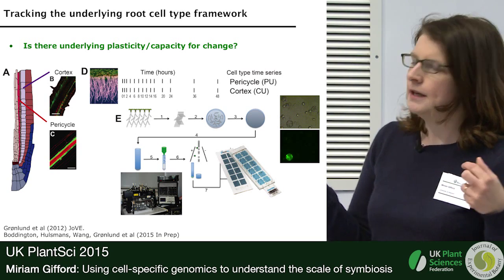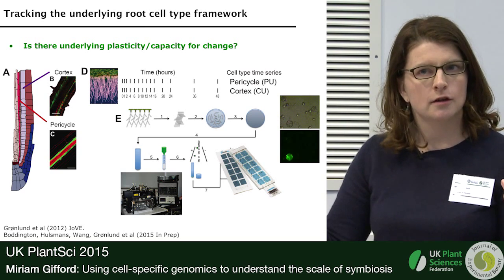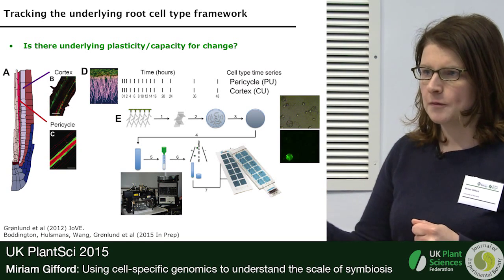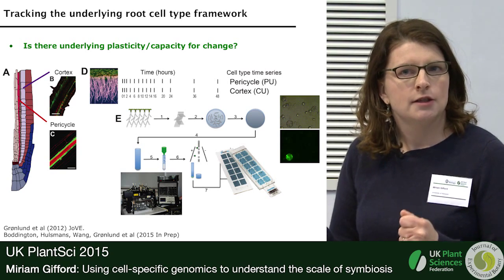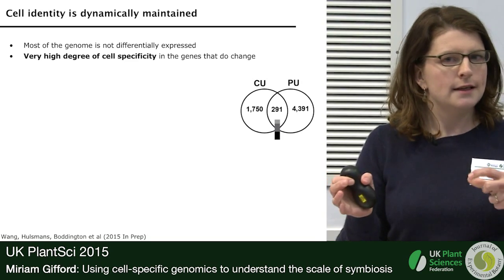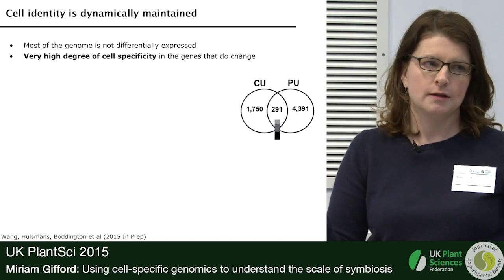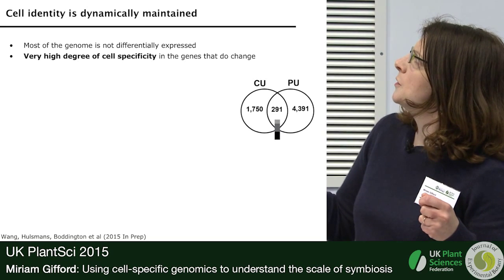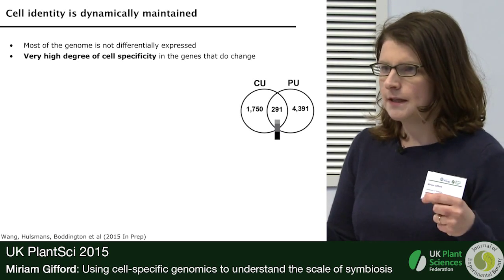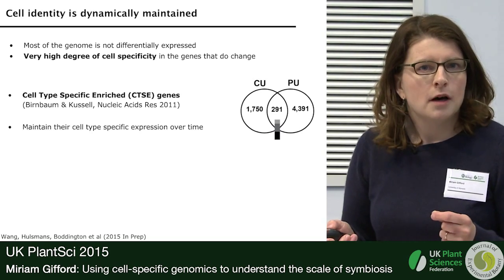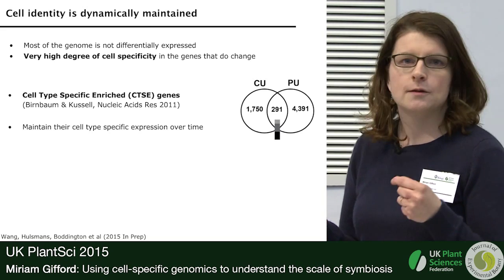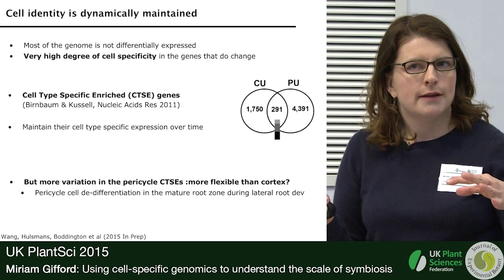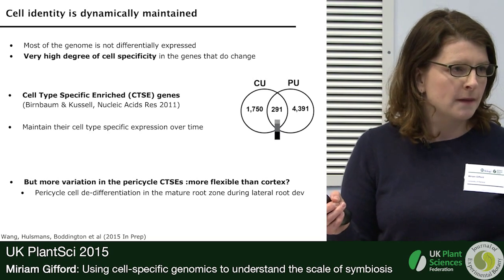To start, we looked at two cell types relevant for plasticity: the pericycle, from which cell division forms new lateral root primordia, and the cortex, which has a similar function during nodulation in forming a nodule. Looking at gene expression over time, we found that most of the genome isn't differentially expressed over a two-day assay period. But for the genes that do change, there's a very high degree of cell specificity. In these circles we show the number of differentially expressed genes over time, and you can see those genes are highly cell-specific. Previously defined cell-specific markers maintain their cell specificity over time, though there's slightly more variation in pericycle identity markers than cortical identity markers.